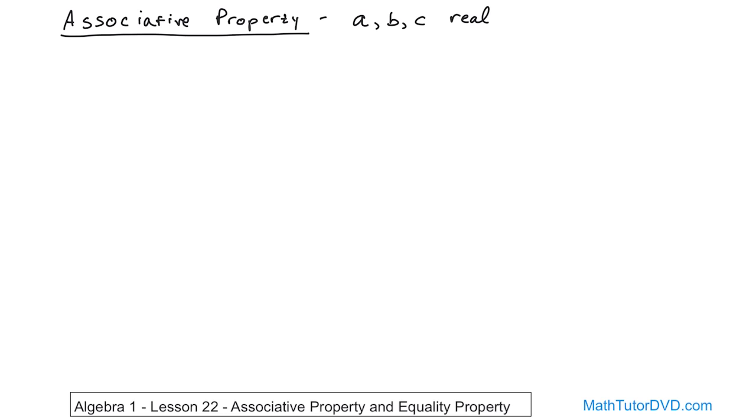What does the associative property say? And it says the following. I'm going to write it down for you and then we'll explain it. Parentheses A plus B, plus the third number C, is equal to A plus parentheses B plus C.